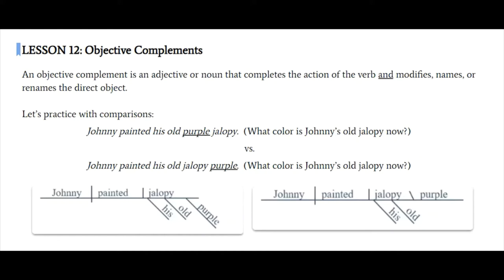Let's take a look at two sentences to make this a little more clear. Johnny painted his old purple jalopy versus Johnny painted his old jalopy purple. So in the first sentence, what color is Johnny's old jalopy now? Well, we don't know. In the second sentence, we know that his old jalopy is now purple.